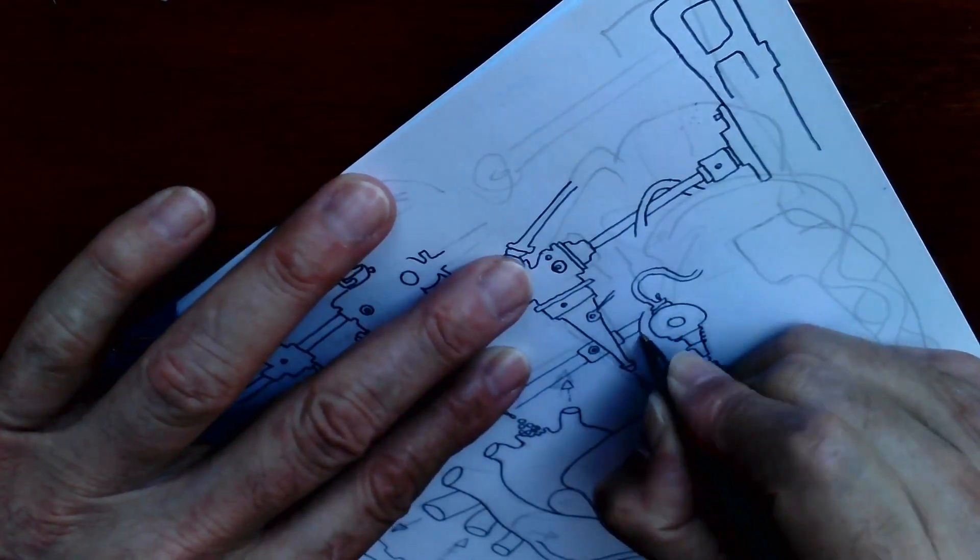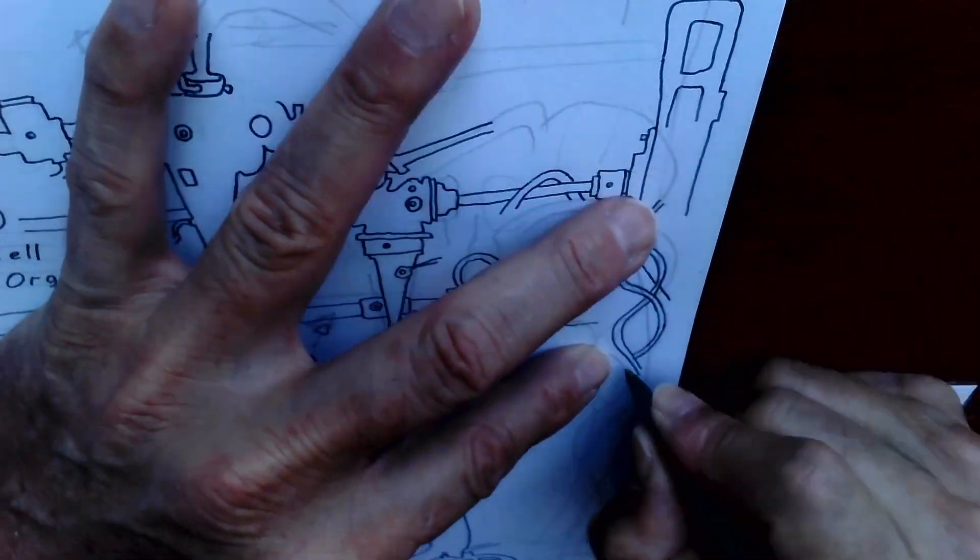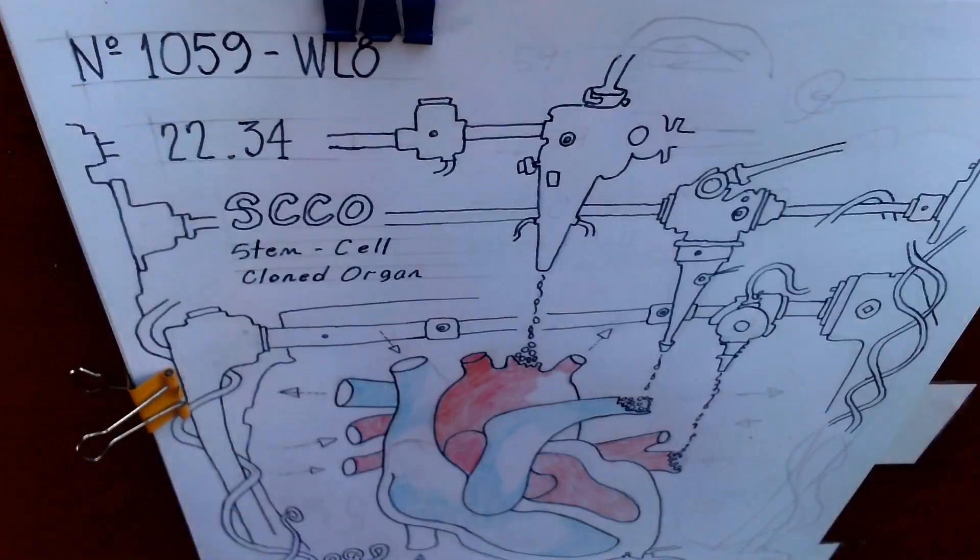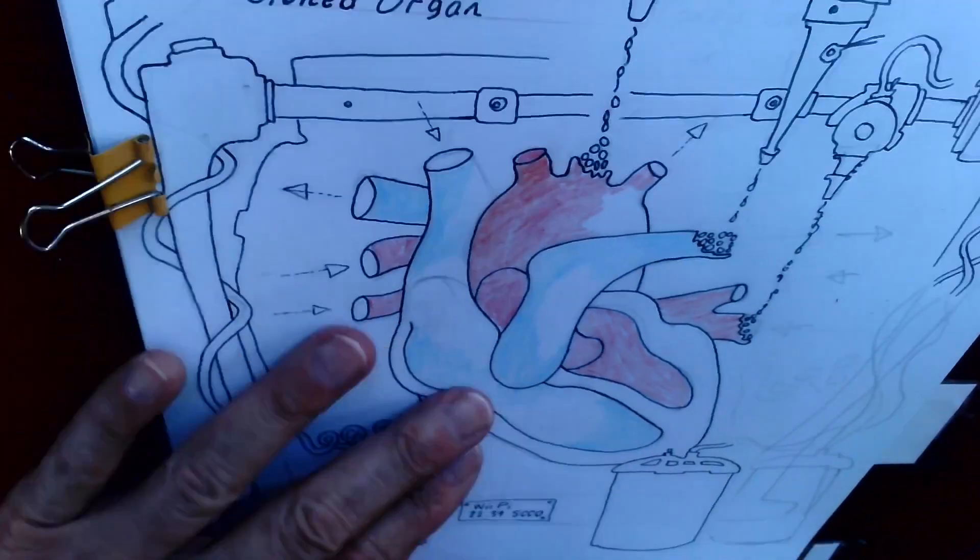Technical Note 22.34, SCCO, Stem Cell Clone Organ. Description: Biopathic organs are cloned using stem cells for replacement such as heart, liver, kidney, or brain.